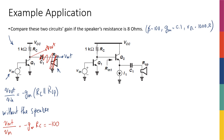With the 8Ω speaker, the gain is negative 0.1 times (1,000 Ω in parallel with 8 Ω). 8 in parallel with 1,000 is pretty much 8, so the gain is about negative 0.8. Not only do I not amplify with a gain of 100 — I actually attenuate the signal. If I connected the microphone to the speaker directly, I would have had better performance than this amplifier.